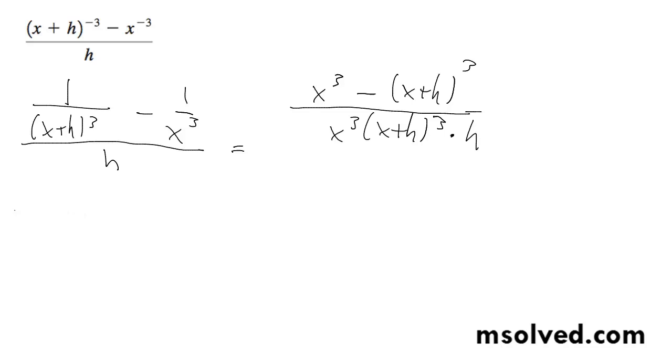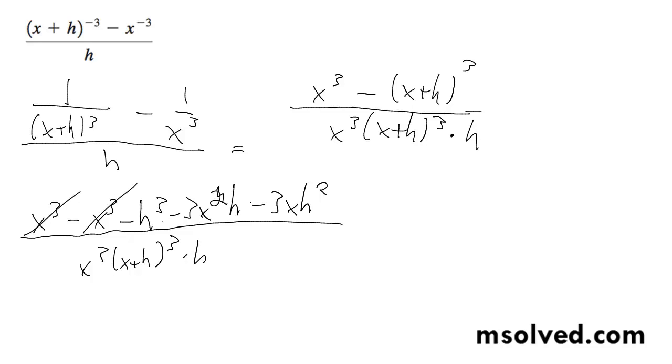For the top portion here, we're going to multiply that out, so it's going to become x cubed minus x cubed minus h cubed minus 3x squared h minus 3x h squared, all over x cubed times x plus h cubed times h. These x cubed terms cancel out.